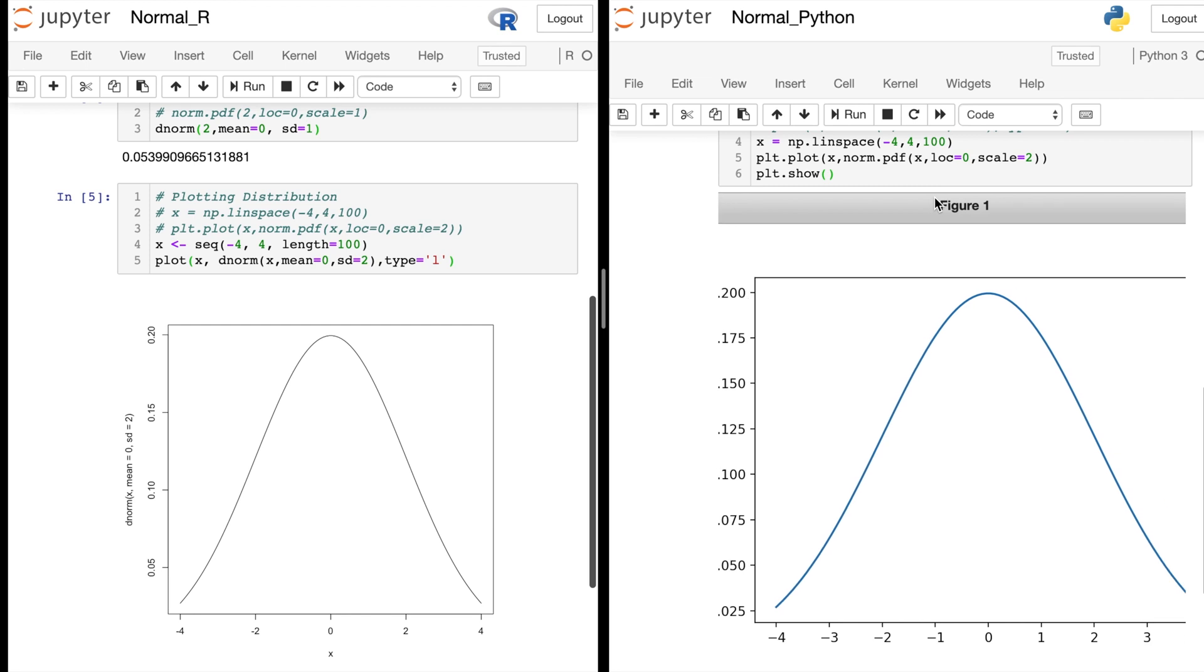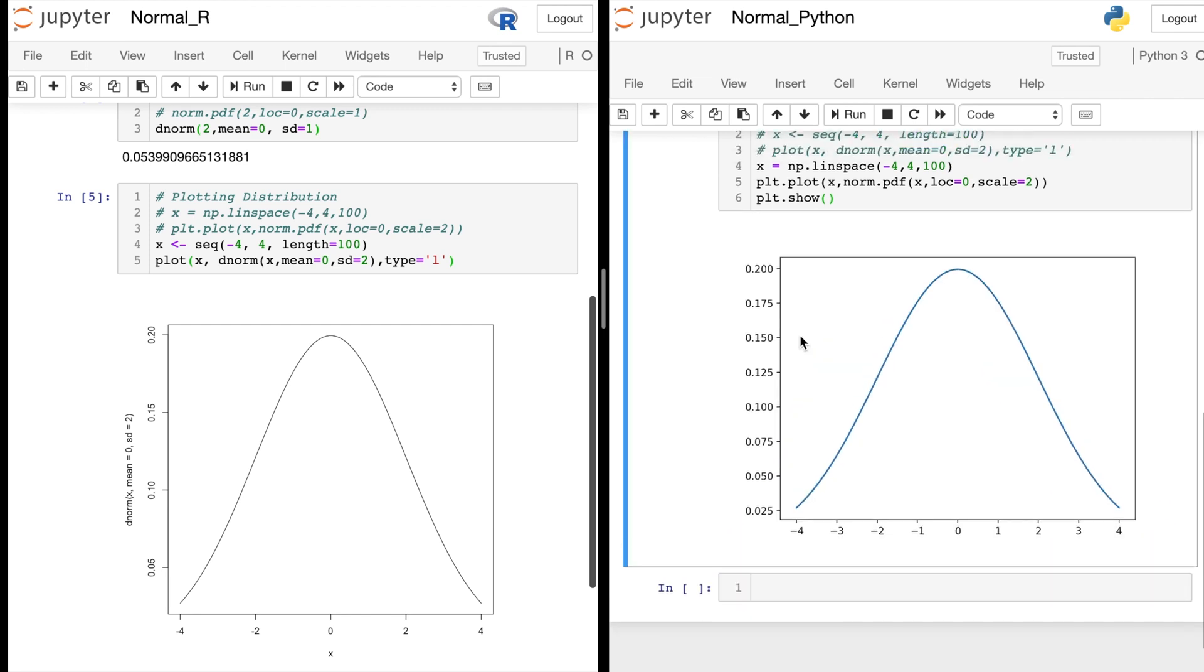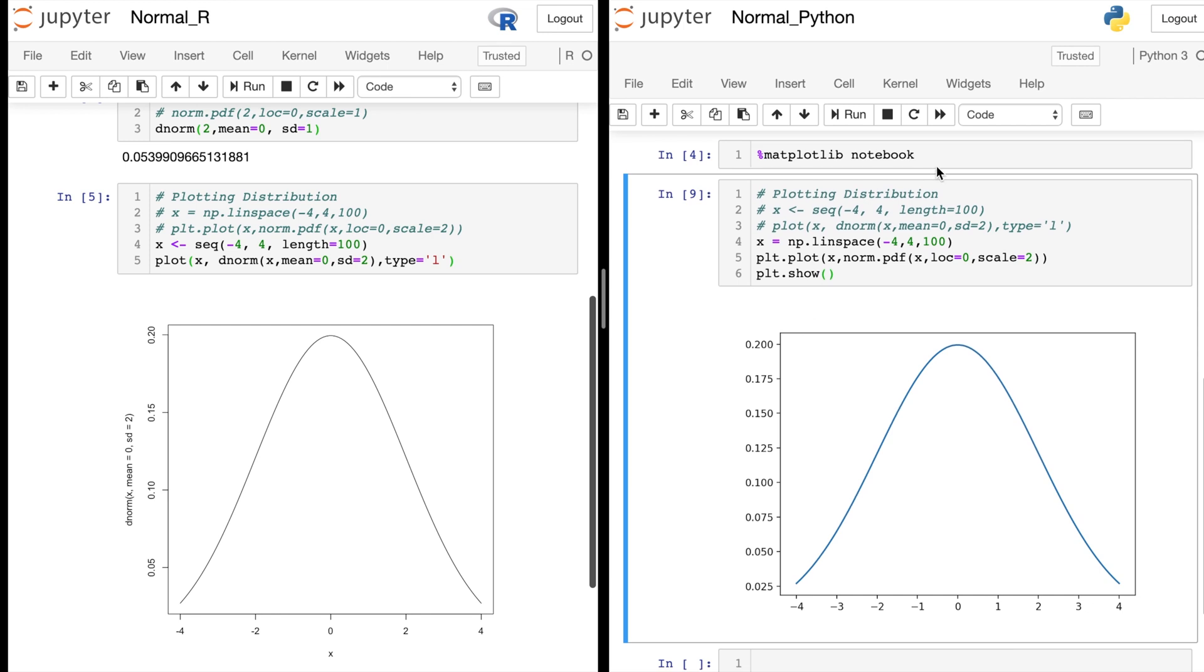It defaults to this nice blue color. And we can go ahead and compare these two beautiful bell curves. They both go up to about 0.2 and, of course, go from negative 4 to 4. So that's very similar ways in how you can plot these normal distributions in R and in Python.